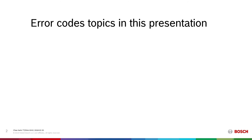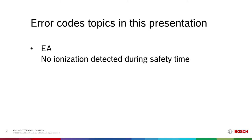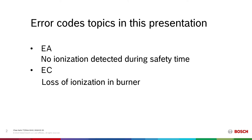Error codes that are common for these units, including EA. EA indicates no ionization detected — simply said, there's no flame in the combustion chamber and the software believes there should be flame. Next is EC. EC is similar and related to EA, but detects a loss of flame while there was flame previously in the combustion chamber, and by the logic, there still should be flame.